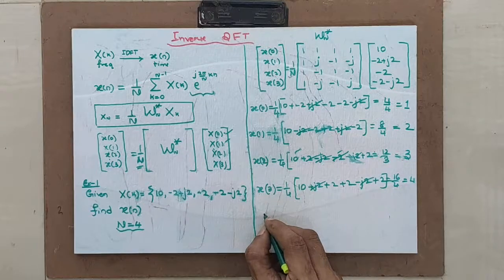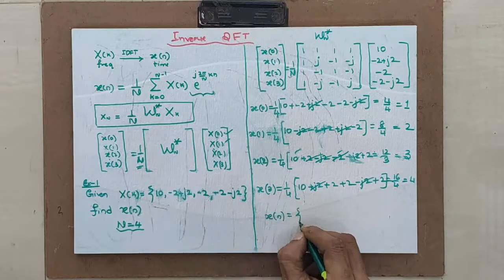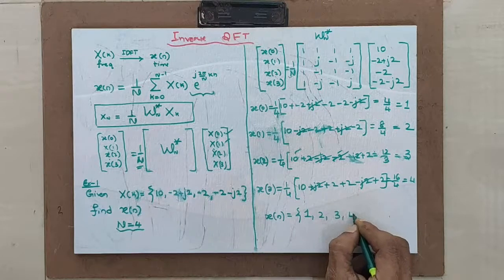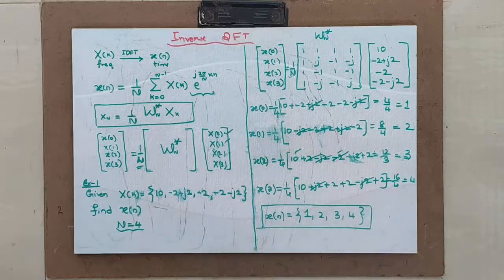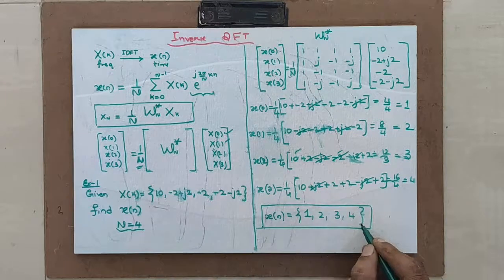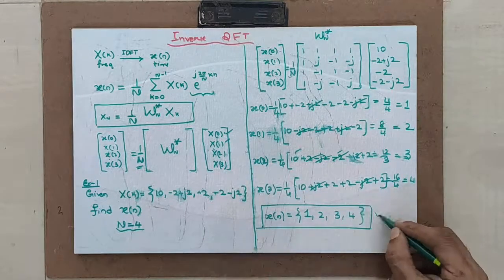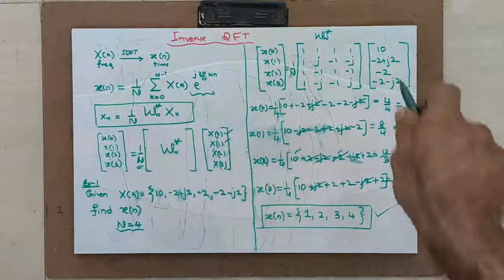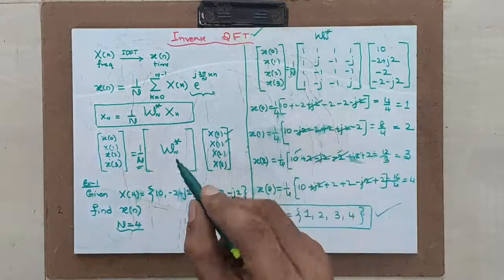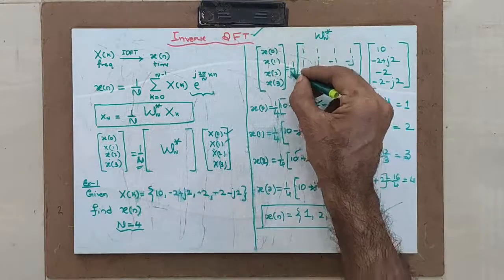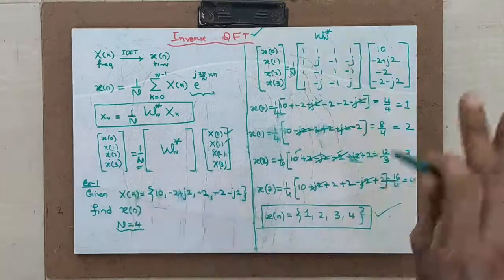My answer has come now. x of n is equal to {1, 2, 3, 4}. You already know this answer, because in the first example when you solved using the matrix method, you started with x of n equal to 1, 2, 3, 4 and obtained x of k as {10, minus 2 plus j2, minus 2, minus 2 minus j2}. This is how you apply the matrix method to find the inverse DFT. What is very important: please write 1 by N and make the twiddle factor matrix a conjugate one.